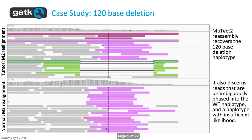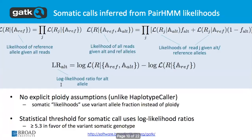One thing to consider is that some samples, like mitochondrial DNA, have a rather large sequencing depth. The HaplotypeCaller engine had to be optimized so the assembler doesn't fall over due to that depth. Adjustments like that had to be constantly made to adapt HaplotypeCaller to Mutect2.